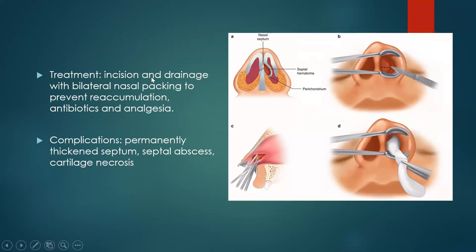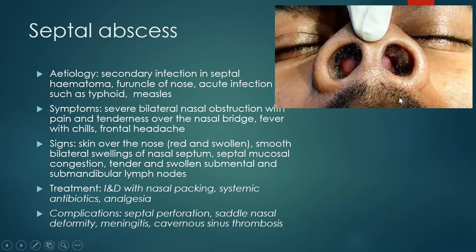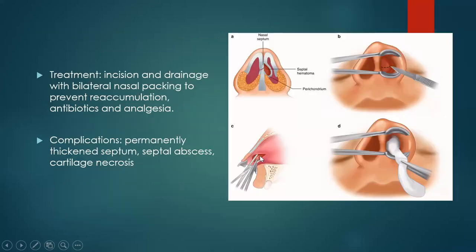Management: once you've made the diagnosis, we do incision and drainage. You make an incision — maybe horizontal on one side and vertical on the other — and drain the blood. Once you've drained the blood, you place the anterior nasal pack — a paraffin or Vaseline gauze — to pack the nose and prevent reaccumulation of blood before the patient has fully healed. Give the patient antibiotics and analgesia. After three to five days, you can remove the nasal pack.